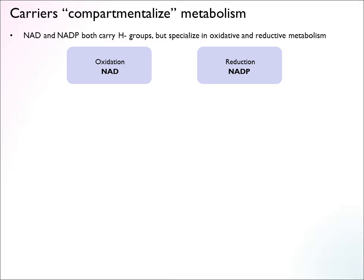One interesting perspective is that carriers can compartmentalize metabolism. As we saw in the lecture on redox metabolism, NAD and NADP both carry hydride groups or high-energy electrons, but they specialize. NAD is used a lot in oxidative pathways to extract energy from compounds, while NADP is used in reductive metabolism — in biosynthesis — where you use energy to build compounds. This divides oxidative and reductive metabolism into two different compartments, which is important so that the cell can independently control them.